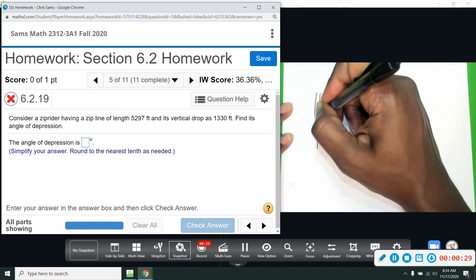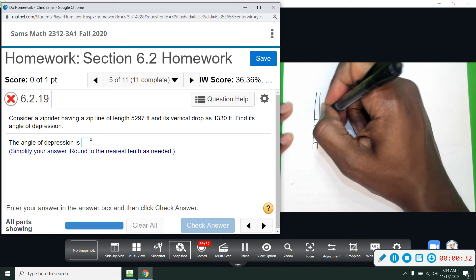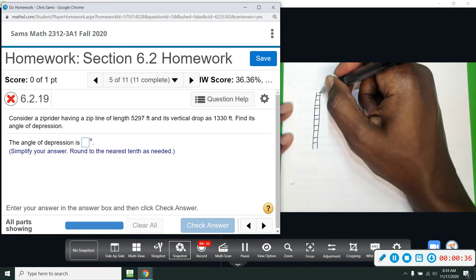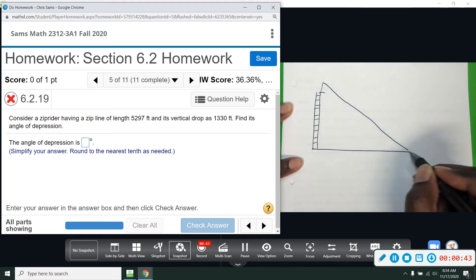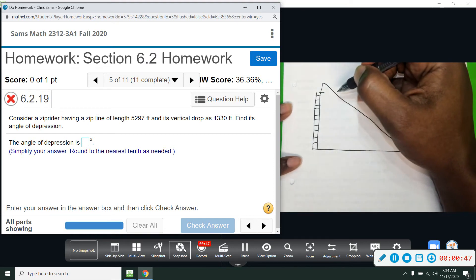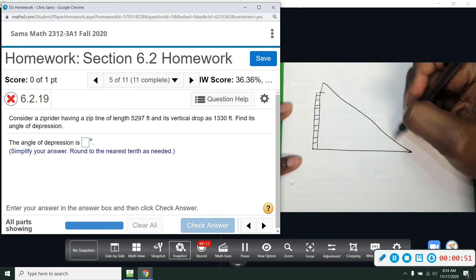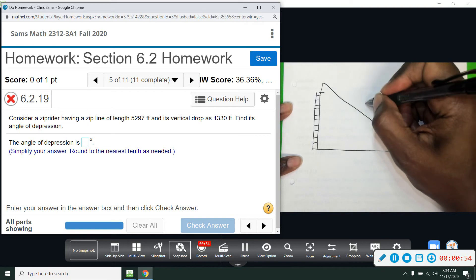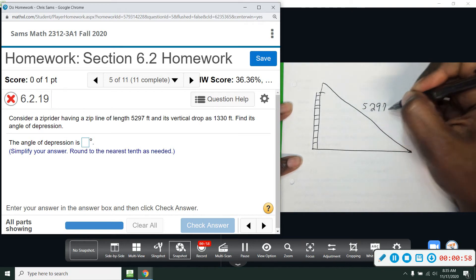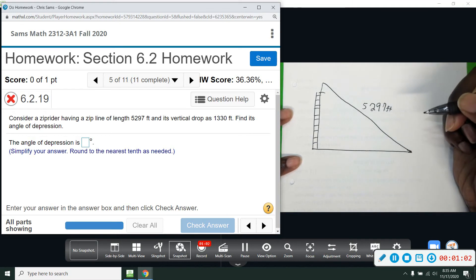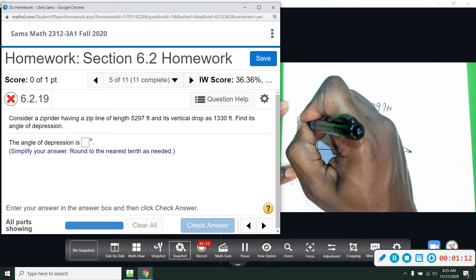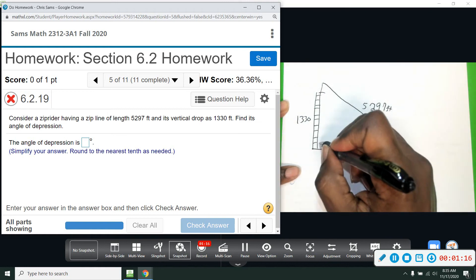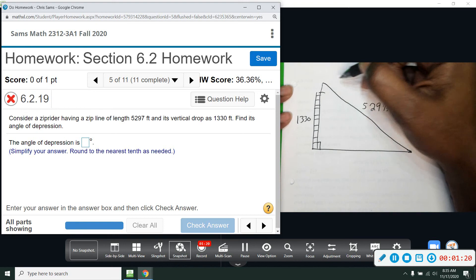Okay, so the image that we get here, imagine that this is a ladder. We don't really need a ladder, we've got some platform and we've got a zip line, people going down a zip line. The zip line is angled to come down. We are told that the length of this zip line, this long line here, will be 5297 feet. We're told that the vertical drop is going straight down from the top, so this side right here would be represented by 1330.